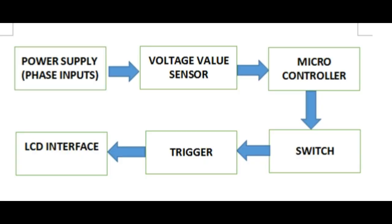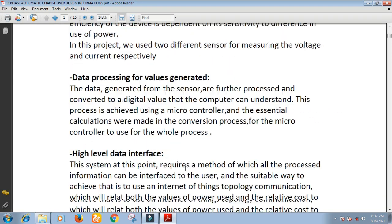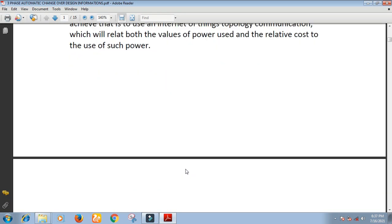In making a microcontroller-based 3-phase automatic changeover system, I used this simple block diagram which started off with a phase input voltage supply, voltage value sensor, microcontroller, switch trigger, and the LCD interface. With this basic information, an overview is made which explains the technology used for the project.